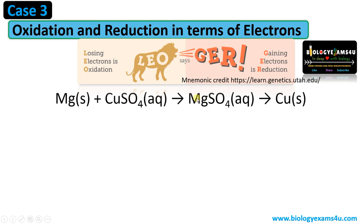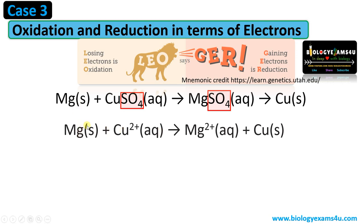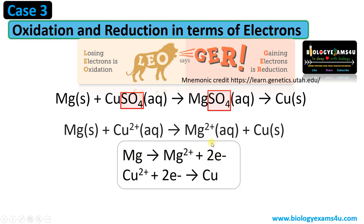Now let us take an example. Magnesium combines with copper sulfate forming magnesium sulfate and copper. The sulfate ions SO₄ are called spectator ions and are not involved in the reaction, so we can remove them and write the ionic equation. Let us split this reaction to understand it better. In this example, magnesium loses two electrons and becomes Mg²⁺.